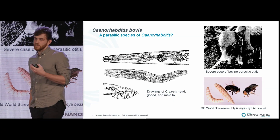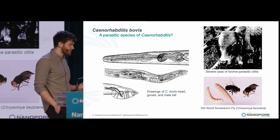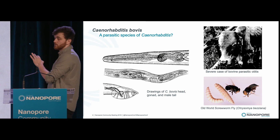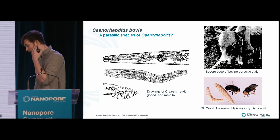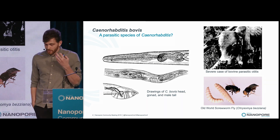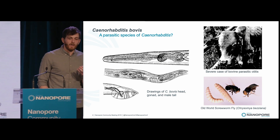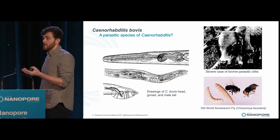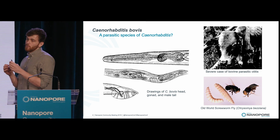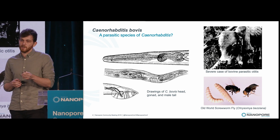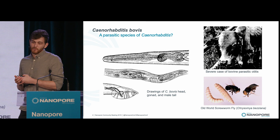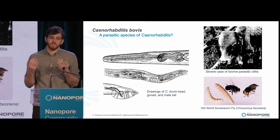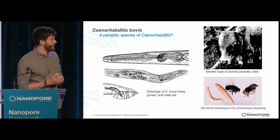C. bovis has been isolated several times from the ears of zebu cattle in eastern Africa, where it's associated with bovine parasitic otitis, which causes inflammation, discharge, ear drooping, and in rare cases mortality. As is the case for most Caenorhabditis species, we believe that C. bovis gets from ear to ear with the help of an invertebrate transport host. In this case, the Old World screwworm fly is a good candidate because its larvae are also found in the ear.